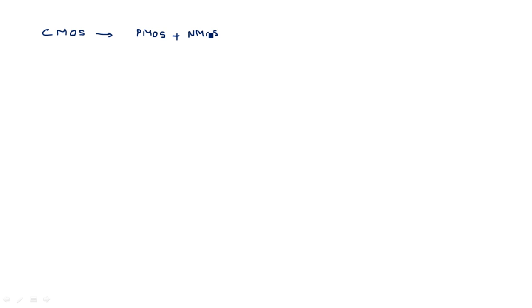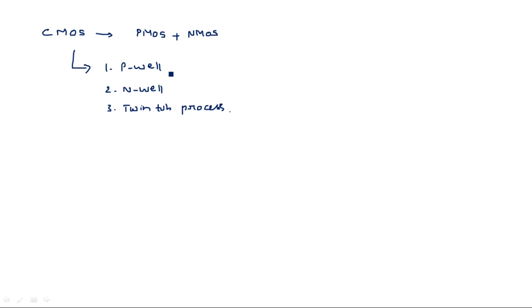CMOS device can be fabricated in three ways. CMOS is nothing but a combination of PMOS and NMOS devices. The first way is the P-well process, the second is the N-well process, and the third is the twin-tap or twin-well process. In the previous two videos I explained about the P-well and the N-well fabrication processes. Here also, the same steps are involved in the fabrication.